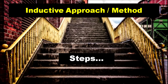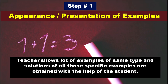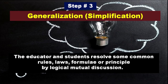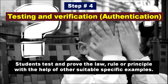Now we are going to talk about the inductive method steps one by one. Step number one: presentation of examples. The teacher shows a lot of examples of the same type and the solution of all those specific examples is obtained with the help of the students. Step number two: observation or reflection. After solving many specific examples, students detect and observe these and try to reach some conclusions. Step number three: generalization. Based on observation, the educator and the students resolve some common rules, law, formula or principle by logical mutual discussion. Step number four: testing and verification. The student tests and proves the law, rule or principle with the help of other suitable specific examples.